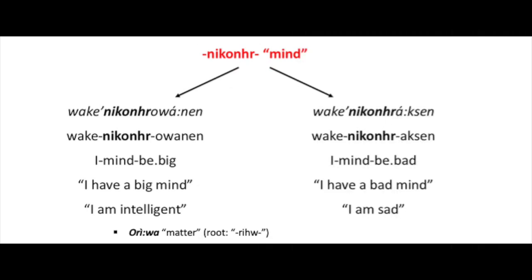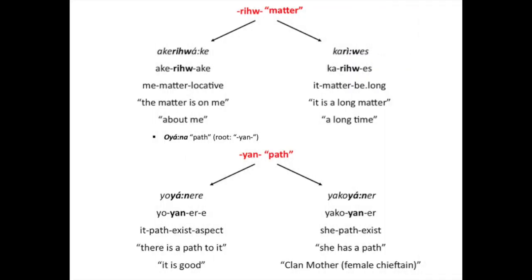The second word is 'ojnigura,' whose root is found in a word meaning 'I have a big mind, I am intelligent,' and another meaning 'I have a bad mind, I am sad.' The third word means matter, subject, thing, and is found in words meaning 'the matter is on me / about me / for me,' and 'it is a long matter / a long time.'